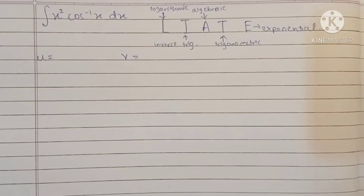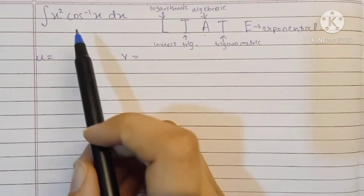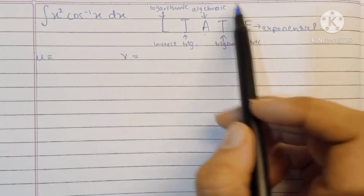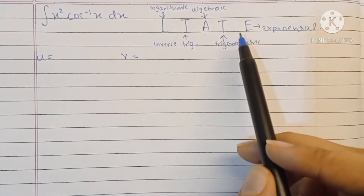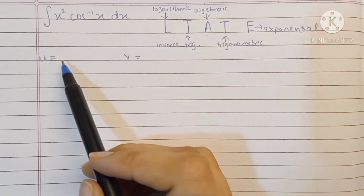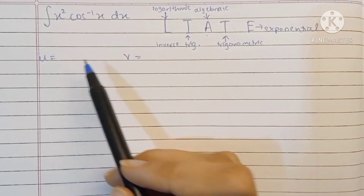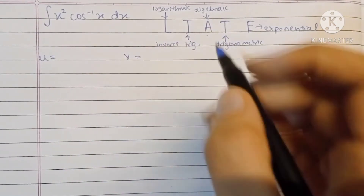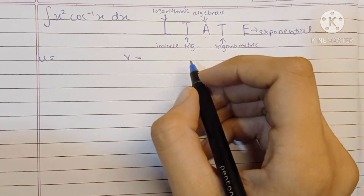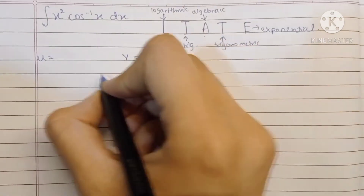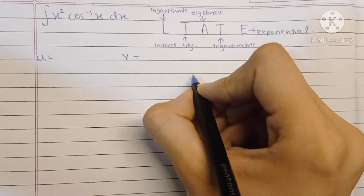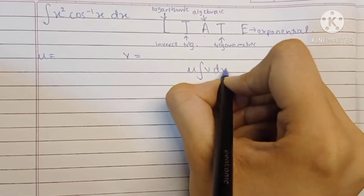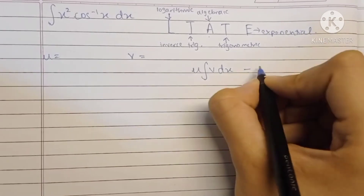The integration by parts rule helps us separate the terms of the integral into two different terms, and the LIATE rule helps us decide which term we should keep as the first term and which term we should keep as the second term. The formula for integration by parts is: u into the integration of v dx minus the integration of differentiation of u into the integration of v dx.